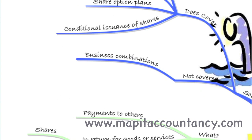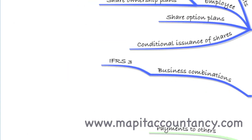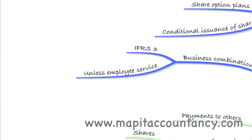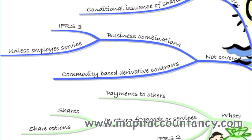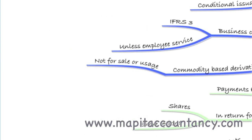What will IFRS 2 not cover? It doesn't cover business combinations — we know that because we've looked at IFRS 3. So broadly speaking, business combinations fall under IFRS 3, unless there's a portion that requires employee service, which may come under IFRS 2. Also, commodity-based derivative contracts are not covered — they'll be under the various financial instrument standards. Anything not for sale or usage, such as goods or services purchased for hedging where you're not expecting to actually take delivery, would fall under the financial instrument standards, not IFRS 2.